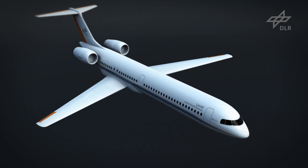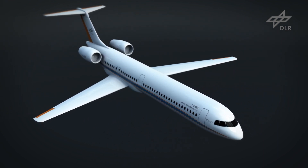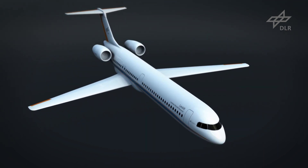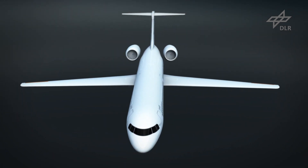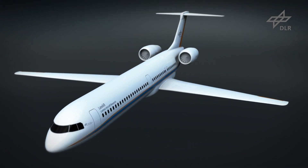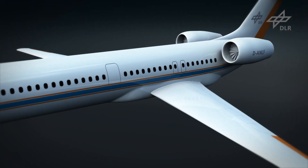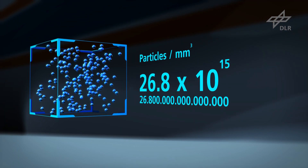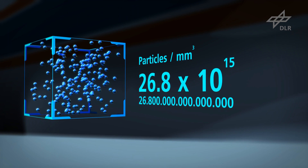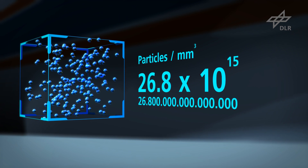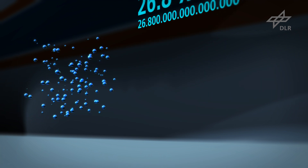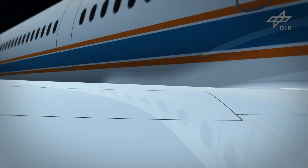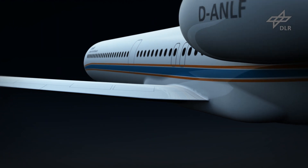Numerical simulation is supposed to depict reality as accurately as possible on a computer, but aircraft and their aerodynamic characteristics are extremely complex. Just a cubic millimeter of air contains some 27 quadrillion particles – a 17-digit number. Even today, supercomputers are unable to precisely simulate the behaviour of these air molecules.